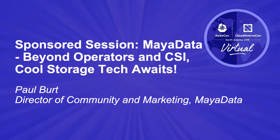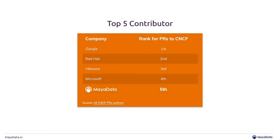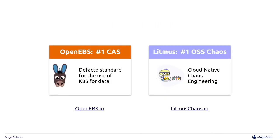A little bit about MayaData. We're a top five contributor to the CNCF ecosystem by PRs, according to the CNCF dashboard. We're also the creators of OpenEBS and Litmus, which is a chaos engineering project. A little bit about OpenEBS: it's a storage engine kind of platform where you get to pick and choose different storage systems to hook in. We call this CAS — container attached storage.